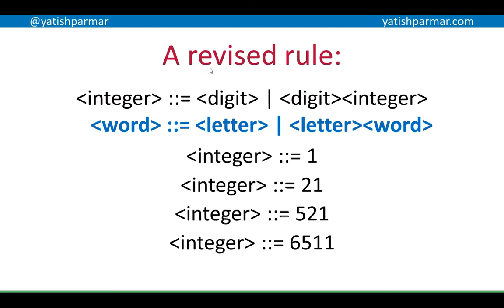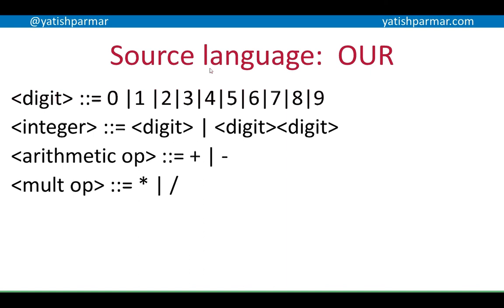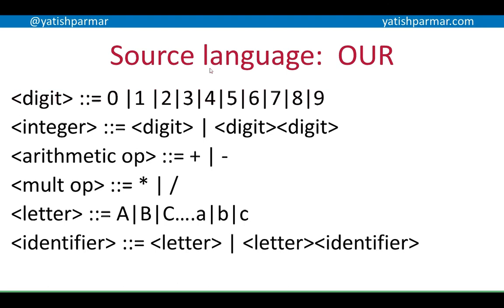We're going to define our own language and call it 'our'. In our language, a digit is defined by 0 to 9, and an integer is defined by digit, or digit integer. We can continue by adding more rules: an arithmetic operator could be defined by plus or minus; a multiplication operator could be defined by asterisk or forward slash. A letter is defined by A, B, C, and so on, and an identifier is defined by letter, or letter identifier — allowing identifiers of several letters.